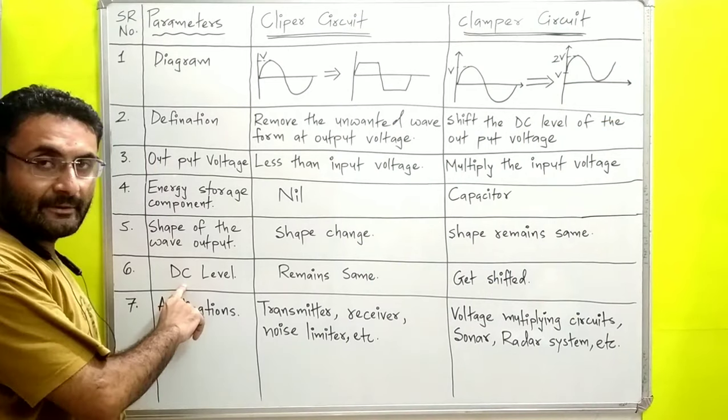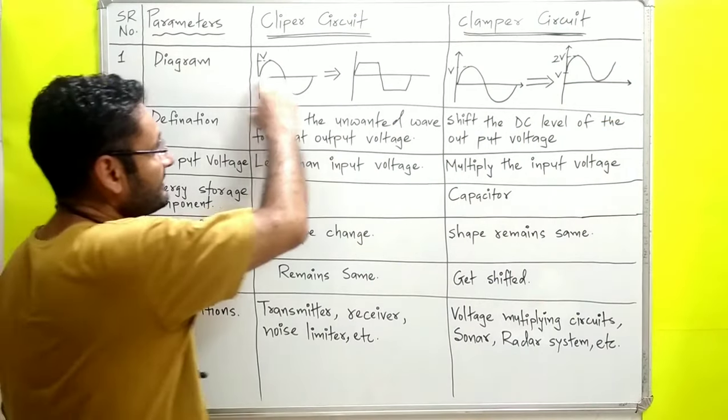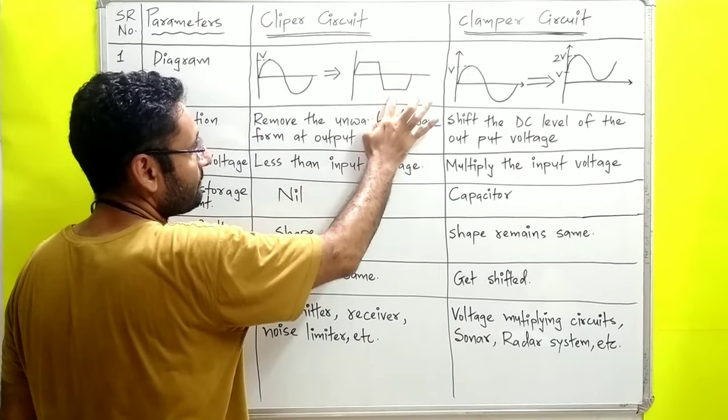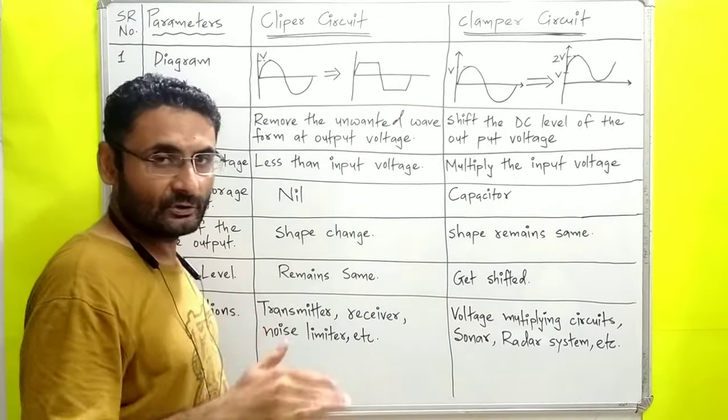Next is the DC level parameter. In the clamper, the DC level is changing, up or down. In the clipper, it simply removes the unwanted portions.